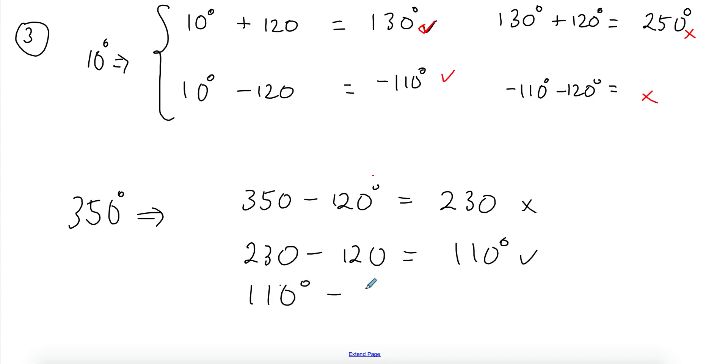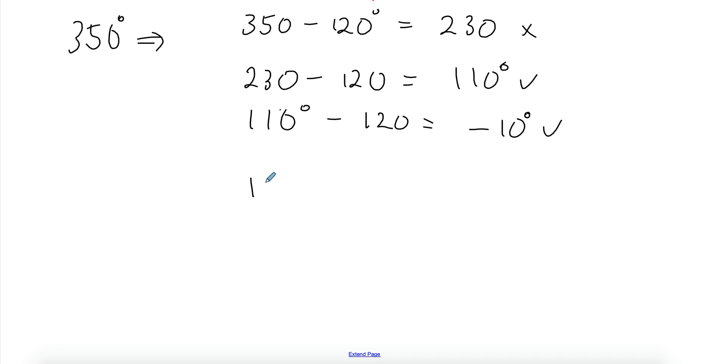Again, subtract 110 minus 120, negative 10, still within our domain. And negative 10 minus 120, that's going to give us negative 130. So still within the domain. If I do another one, I will be out of the domain. So I'm just going to stop there.